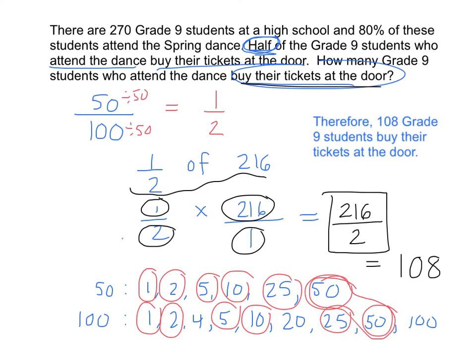We've answered the question they wanted us to find: how many grade 9 students who attend the dance buy their tickets at the door? Therefore, the answer is 108 grade 9 students. Now remember, this was just one way of solving this using percents, fractions, and decimals — but there are many ways you could have solved this problem. Can you think of another way? Check out the playlist to find different solutions.